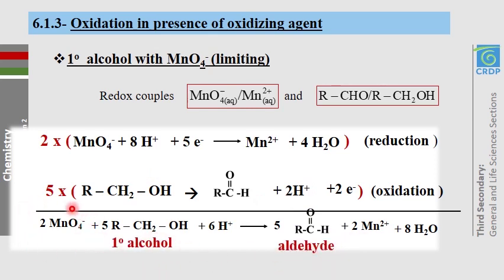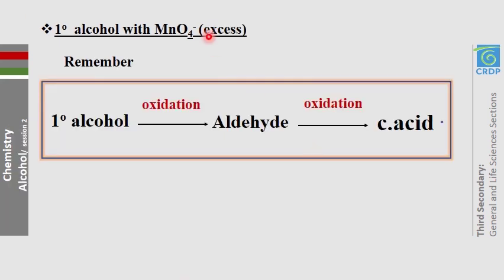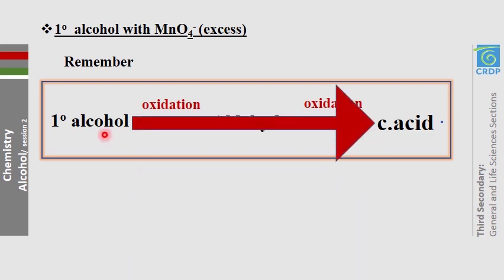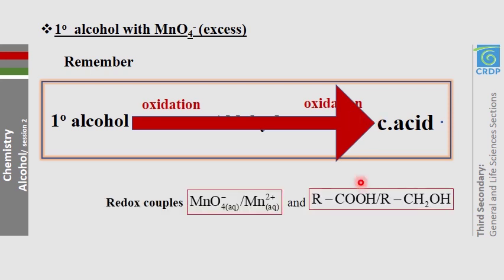Now if MnO₄⁻ is in excess, the aldehyde can find more oxidizing agent and react to give carboxylic acid. So directly: primary alcohol with excess oxidizing agent gives carboxylic acid. The redox couples in this case are MnO₄⁻/Mn²⁺ and primary alcohol/carboxylic acid.